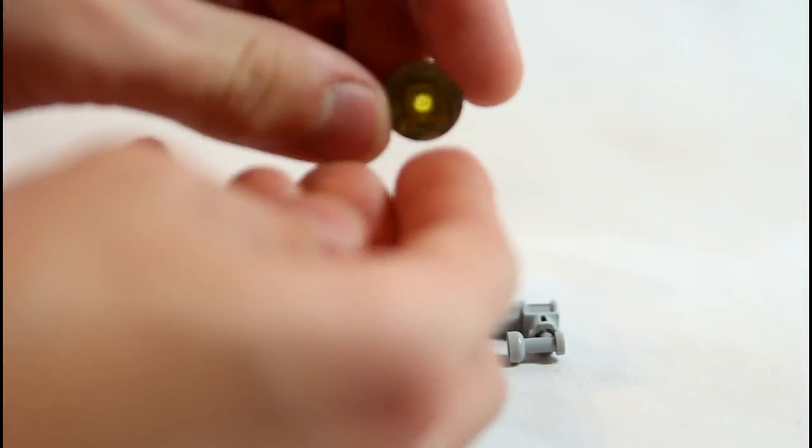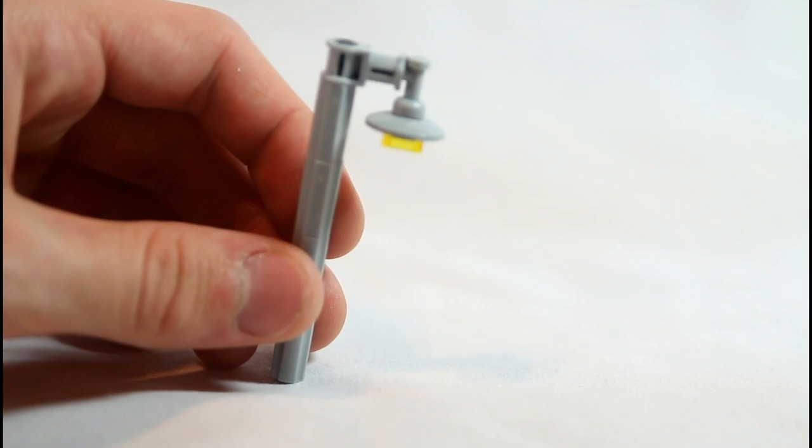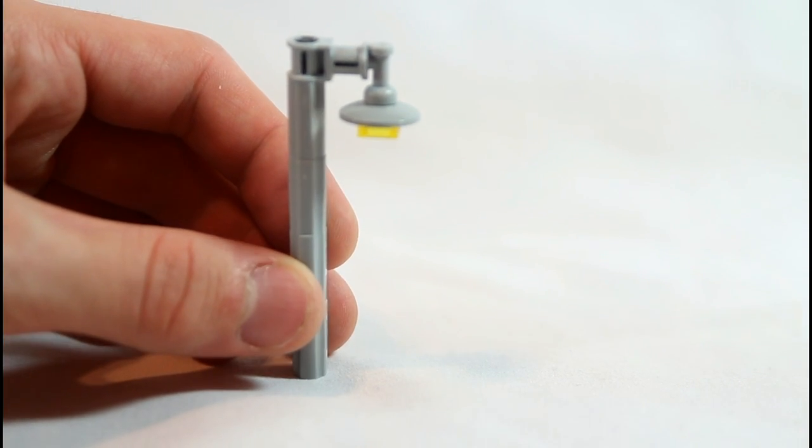And then you can attach the one by one plate inside the dish, and then attach that to the bottom of the tap. And there you have your street lamp.